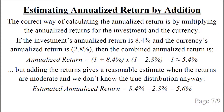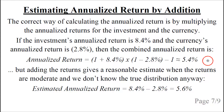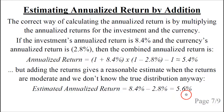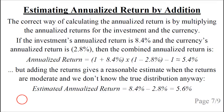We can also estimate the annualized return by using addition instead of multiplication. In the previous example, the investment's annualized return was 8.4% and the currency's annualized return was minus 2.8%, giving a combined return of about 5.4%. Adding them directly gives about 5.6%, a small difference. When returns are moderate, this difference is minor, and since we don't know the true distribution for the future currency, this approximation is probably good enough.